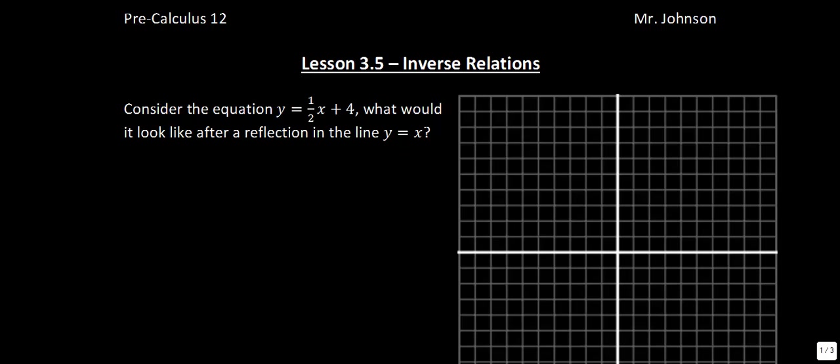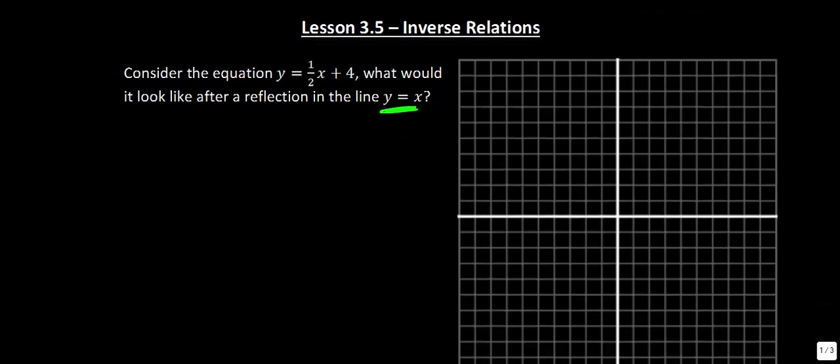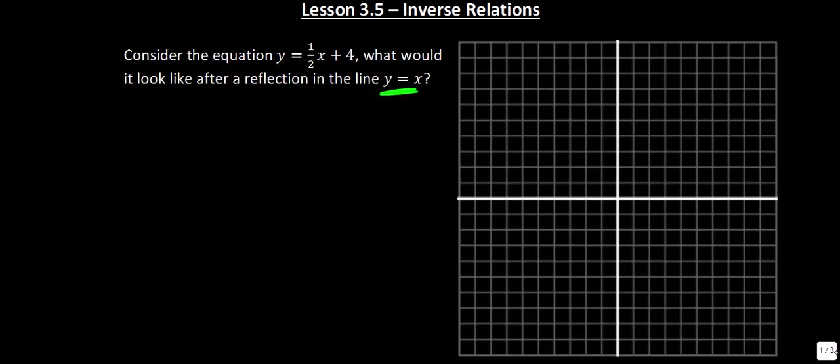When we say that we're taking the inverse, the big thing we're doing is reflecting a given equation across the line y equals x. So let's look at the given equation we have right here. We're given y is equal to one-half x plus 4, and let's see what it would look like after we reflect across this line y equals x.